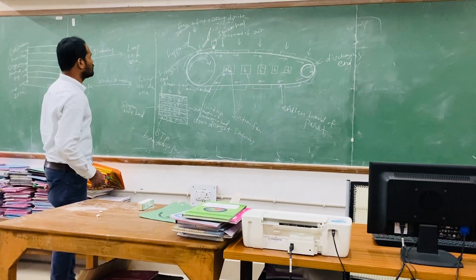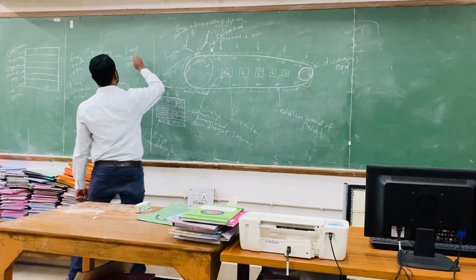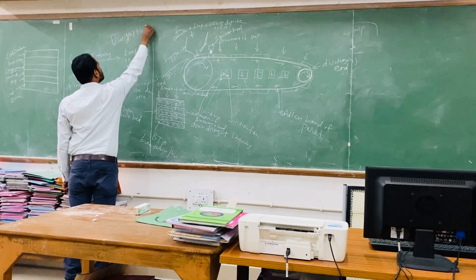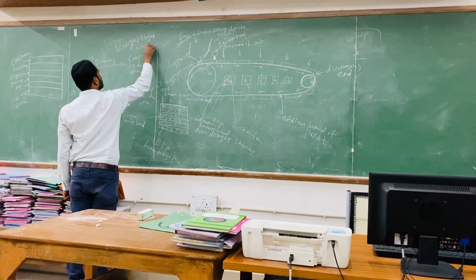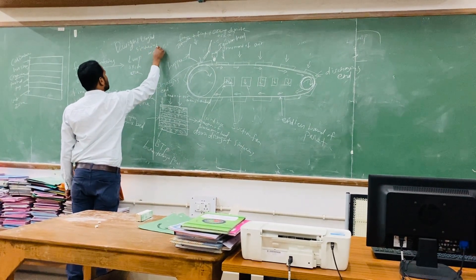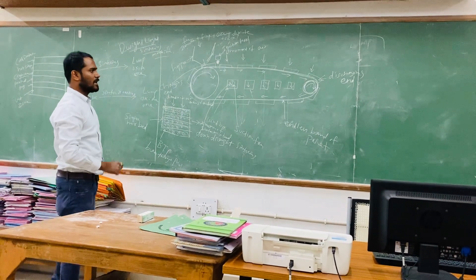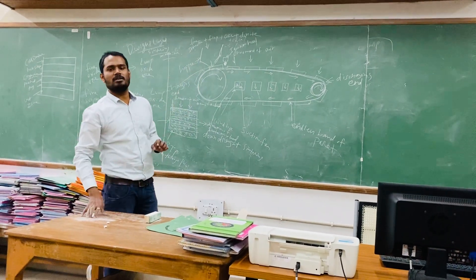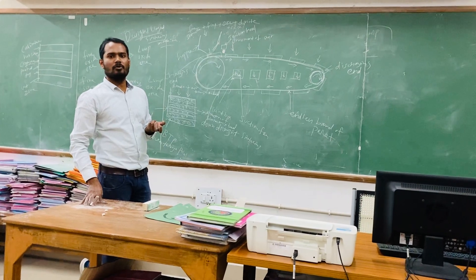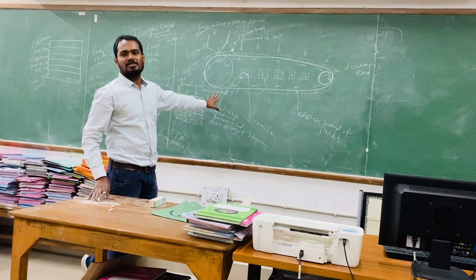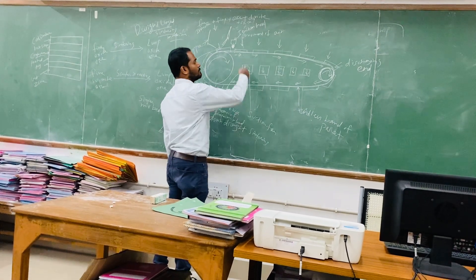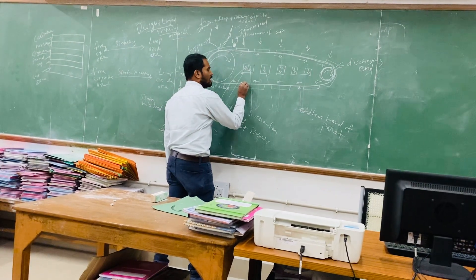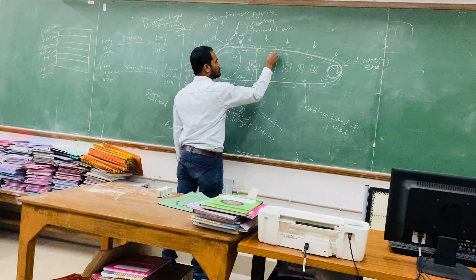The sintering machine is called the Dwight-Lloyd sintering machine. By using the Dwight-Lloyd sintering machine, we can do sintering which is an agglomeration process, and we can also do sinter roasting. For sintering of iron oxide ore, it is a downdraft process — the air flows from top to bottom. But to do sinter roasting, you have to use updraft — the direction of the air is from bottom to top. That is the key difference.